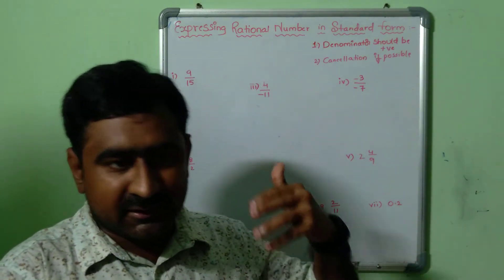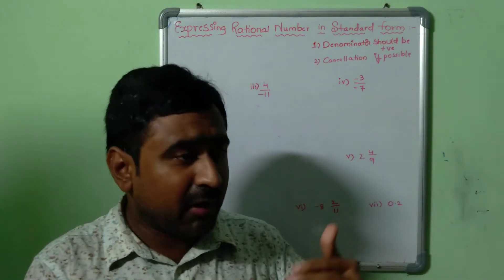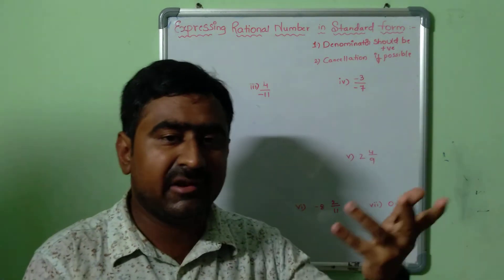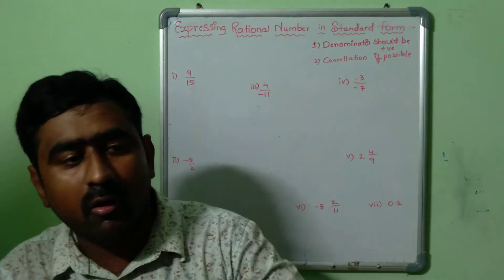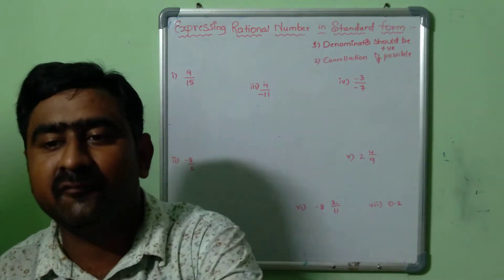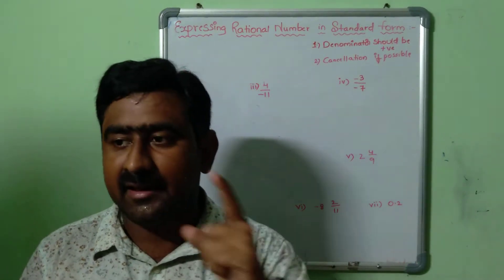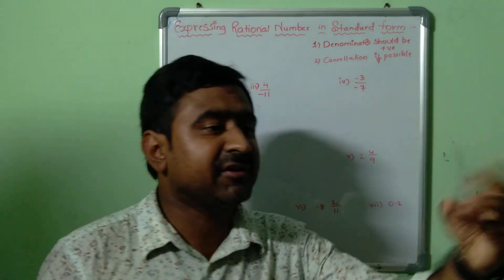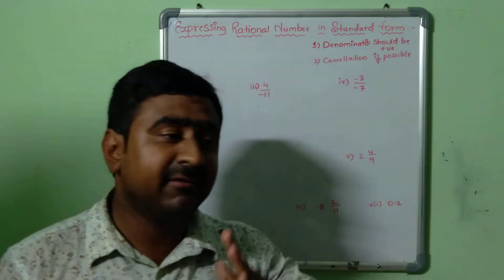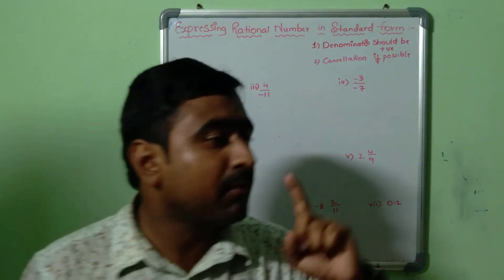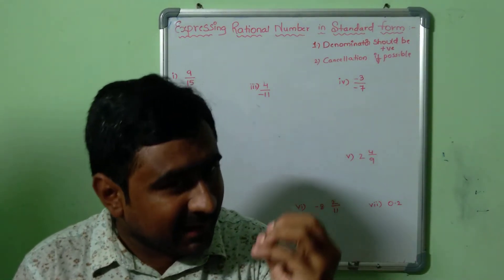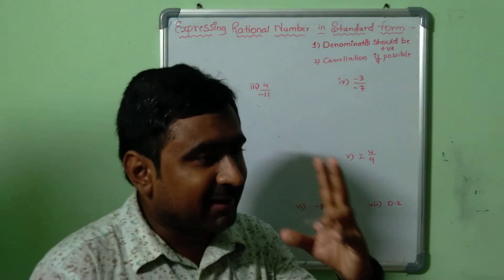In the previous session we discussed how to express a rational number as a sum of an integer and a rational number, but right now in this session we are going to concentrate on how to convert a given rational number into its standard form. This topic is very important for exam questions, including fill in the blanks and multiple choice questions.